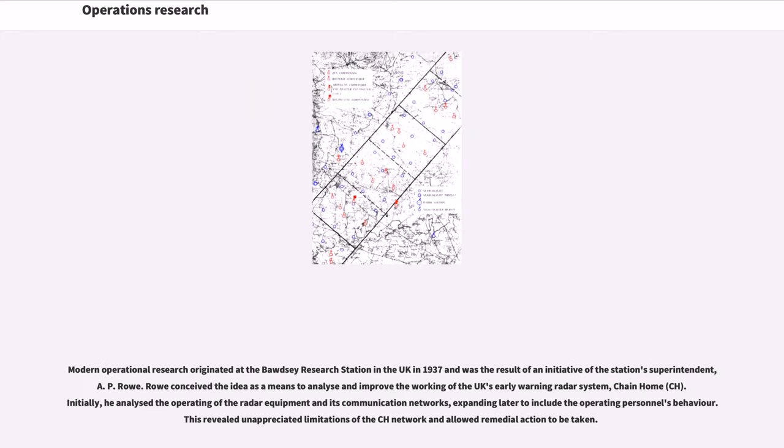Modern operational research originated at the Bawdsey Research Station in the UK in 1937 as a result of an initiative by the station's superintendent, A.P. Rowe. Rowe conceived the idea as a means to analyze and improve the working of the UK's early warning radar system, Chain Home. Initially, he analyzed the operation of the radar equipment and its communication networks, expanding later to include the operating personnel's behavior. This revealed unappreciated limitations of the CH network and allowed remedial action to be taken.